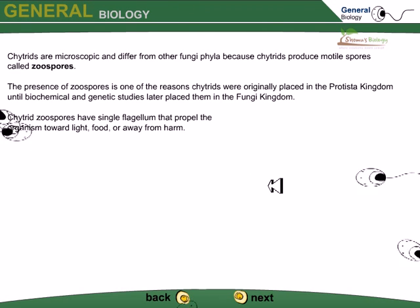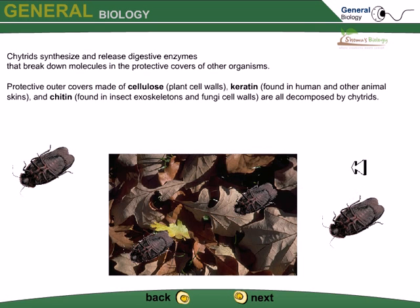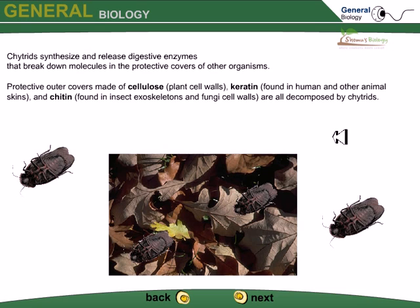Chytrid zoospores have a single flagellum that propels the organism toward food or away from harm. Chytridiomycetes synthesize and release digestive enzymes that break down molecules in the protective covers of organisms — such as cellulose found in plant cell walls, keratin found in human and other animal skins, and chitin found in insect exoskeletons and fungi cell walls. Chytrids can degrade and decompose all of these materials.